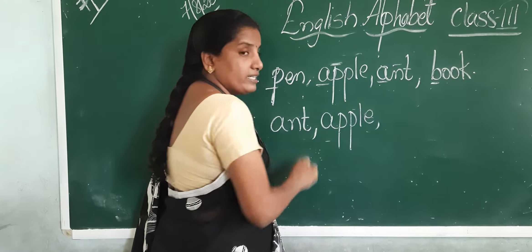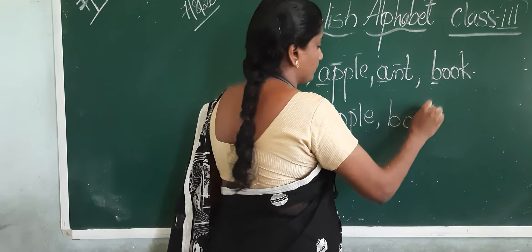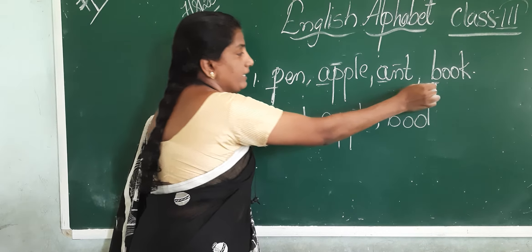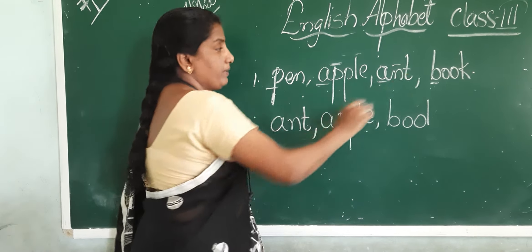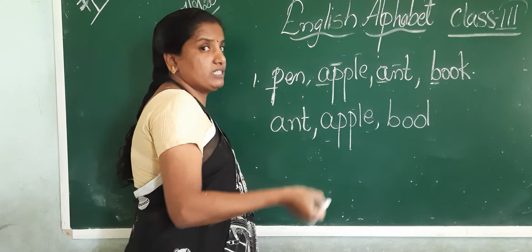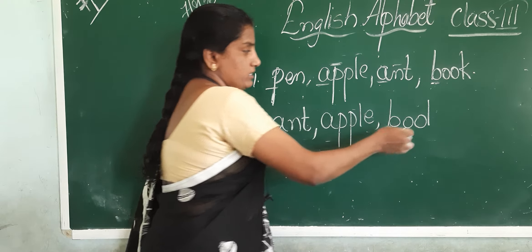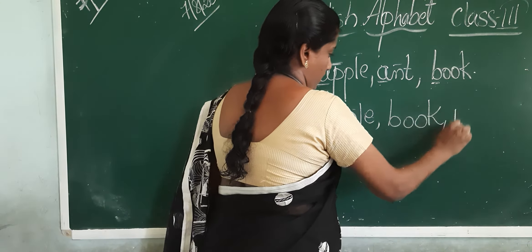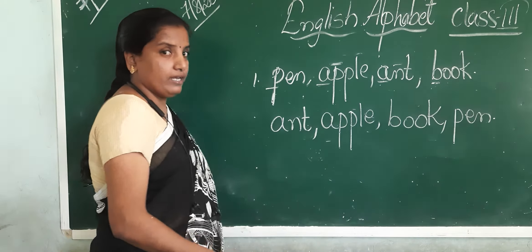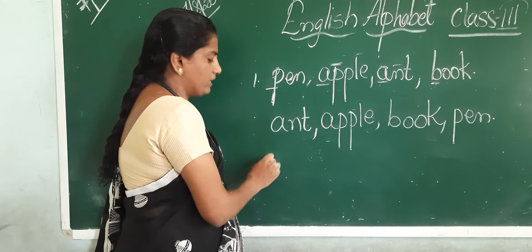Our next word is book. Why book, children? We are comparing the first letters B and P. B comes first, so book comes before pen. Next is pen. Let us discuss another example, children.